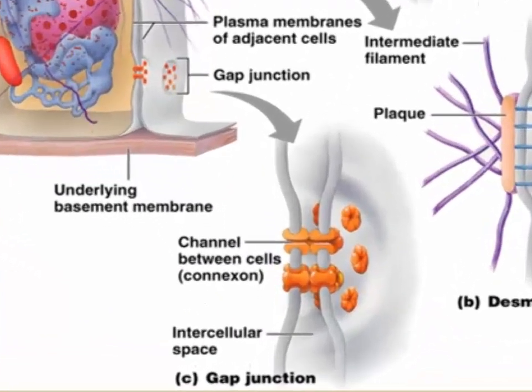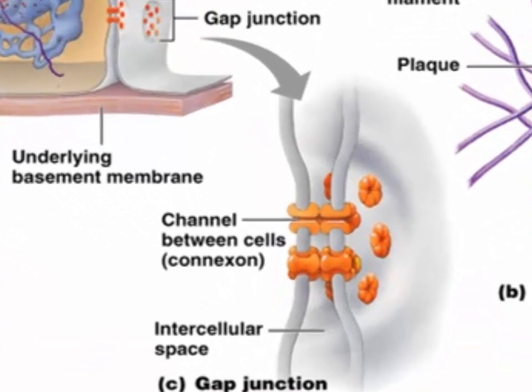The third type are gap junctions. Gap junctions are intercellular channels that permit the free passage between cells of ions and small molecules. Because ions can flow through cells connected to each other by gap junctions, gap junctions permit direct cell-to-cell chemical communication. Gap junctions are commonly found in cardiac muscle cells, for example, where they allow fast spread of signals needed for these cardiac muscle cells to contract in unison.